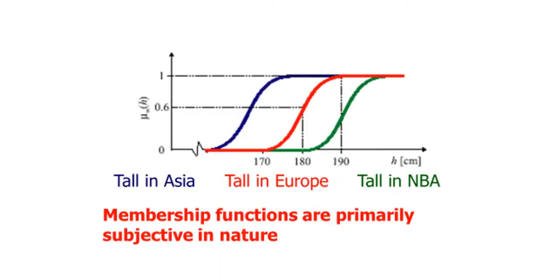If you are tall, tall in Asia is perhaps different from tall in Europe and tall in NBA. In Asia, the tall is between this range until 190. In Europe, it is between this range until 190. We have tall in NBA like this.